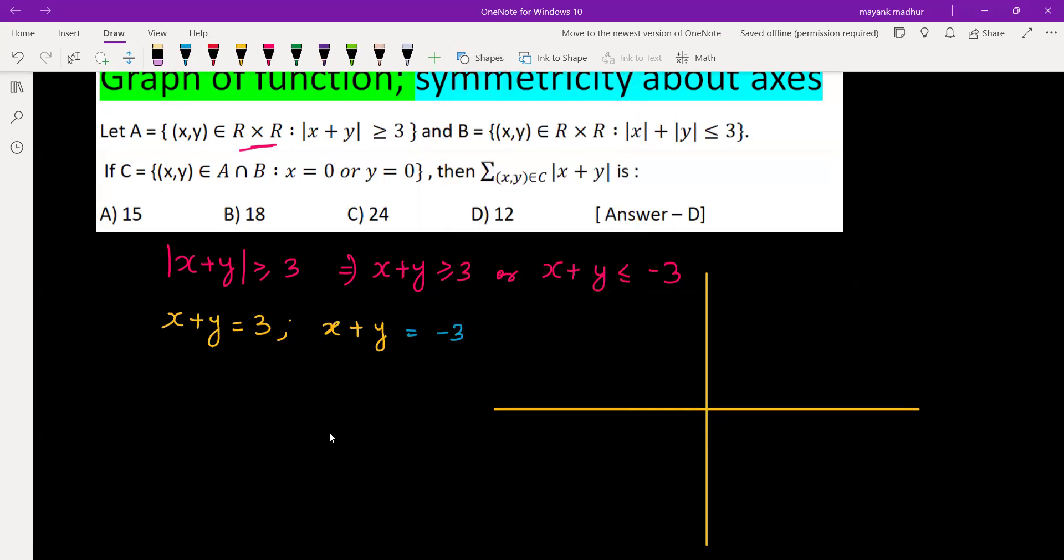These are two parallel lines. x plus y equal to 3 will be somewhat like this. So this is your x plus y equal to 3, and we need x plus y greater than or equal to 3, which means this side of the line.